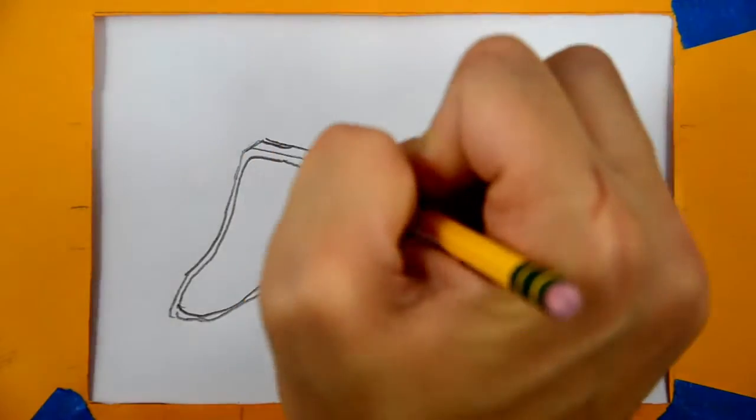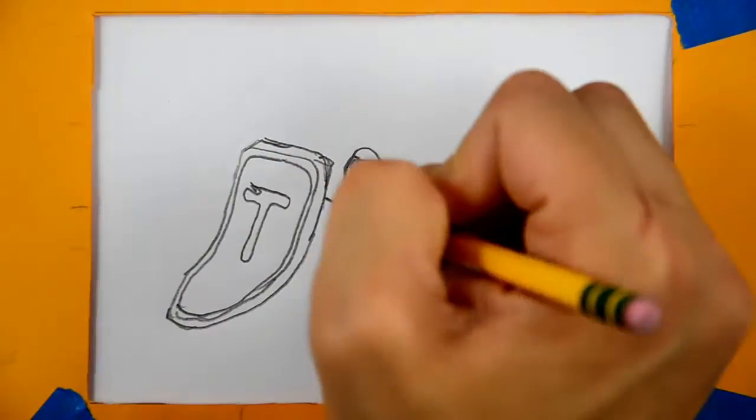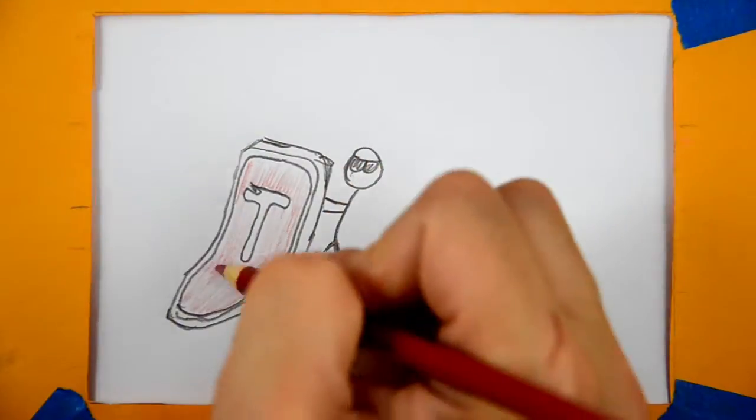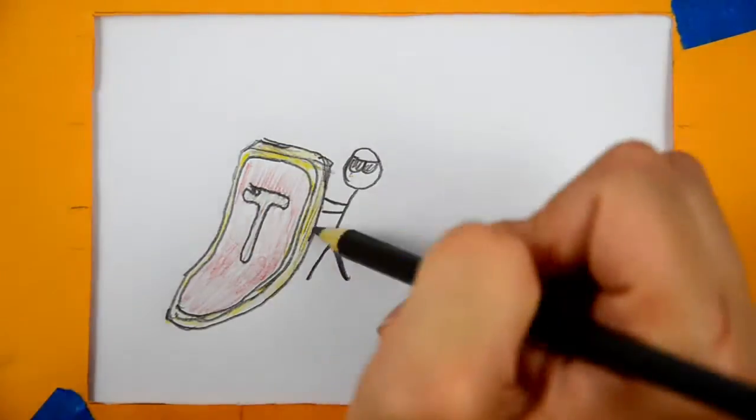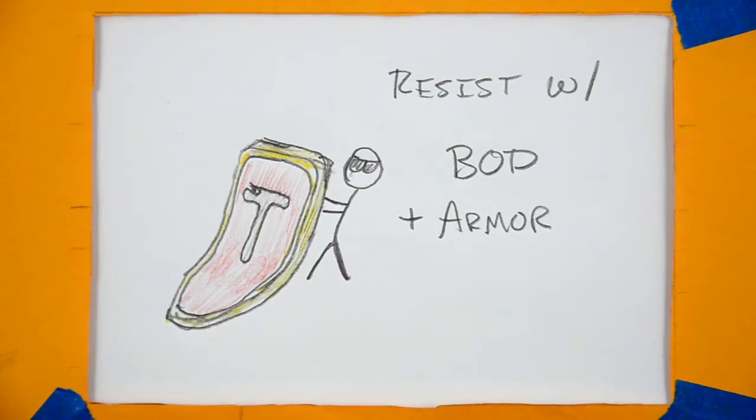Next, the meat shield must resist the incoming damage by rolling its body attribute plus the armor rating of any armor the meat shield is wearing. Any unresisted damage is applied to the meat shield.